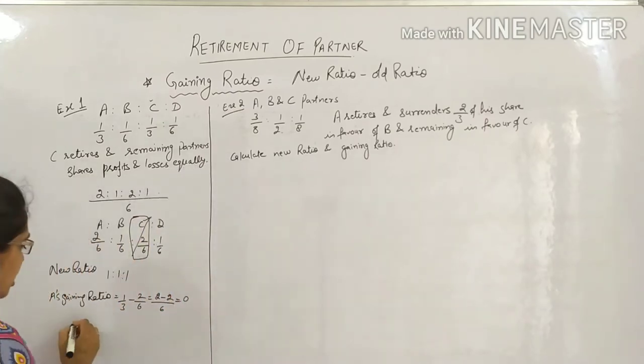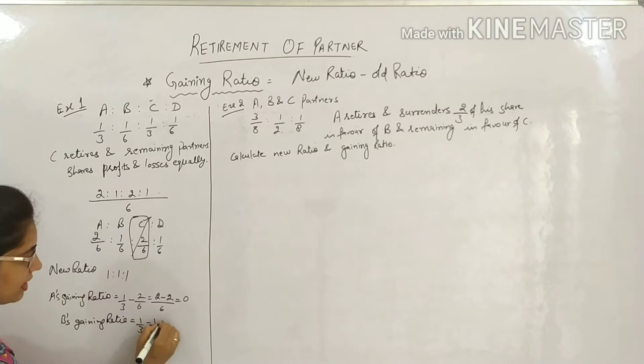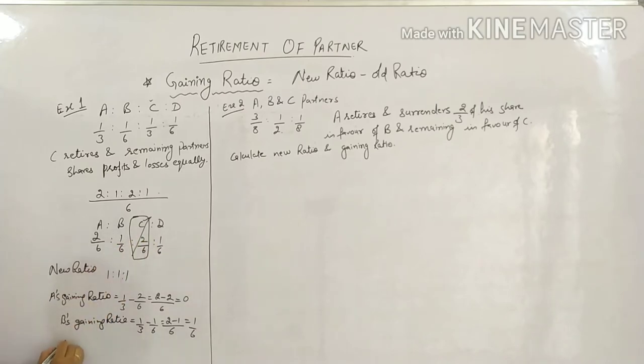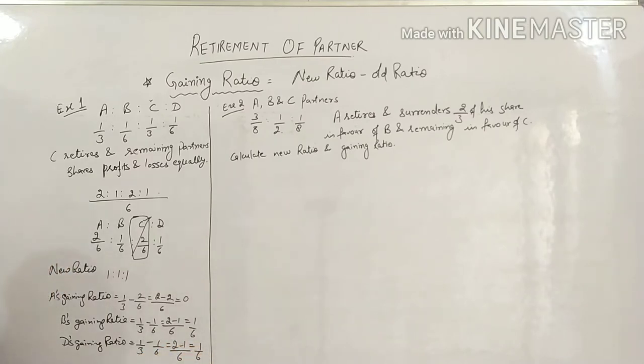Next, let's calculate B's gaining ratio. B's new ratio is 1 by 3, minus old was 1 by 6. Taking LCM, that is 1 by 6. Clear?